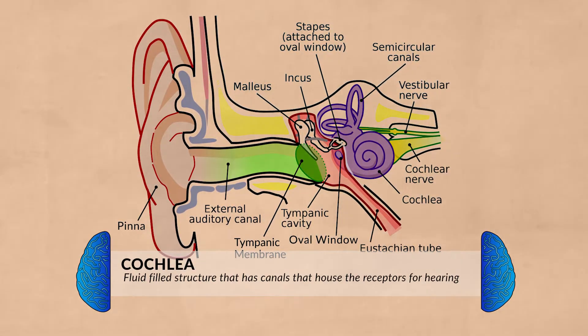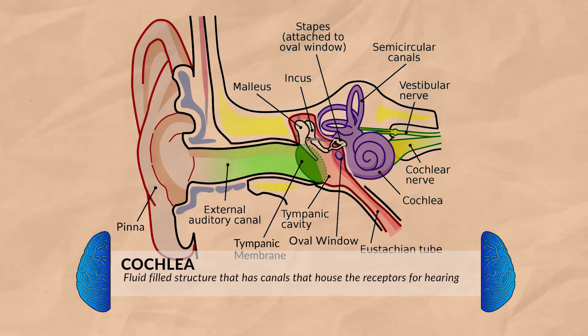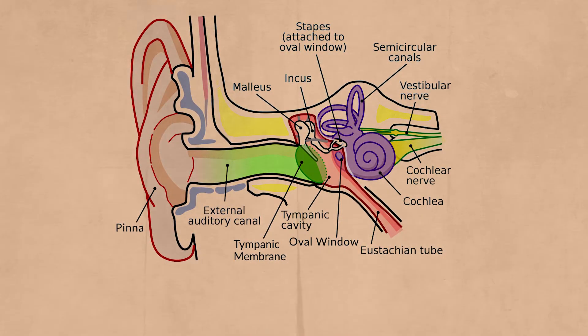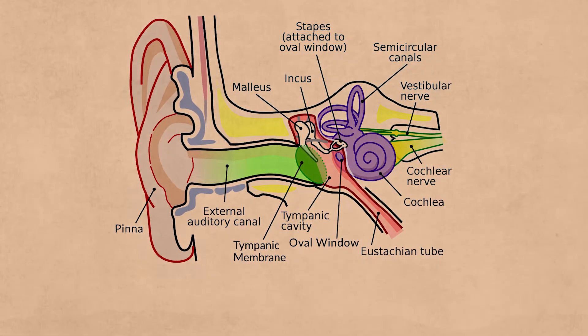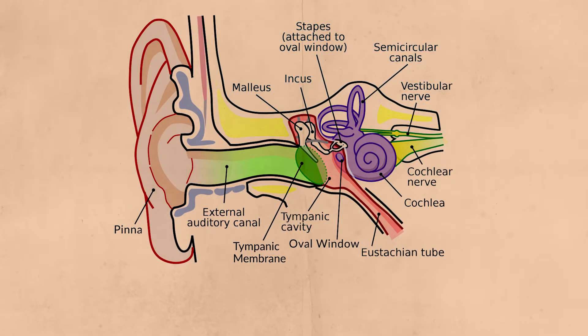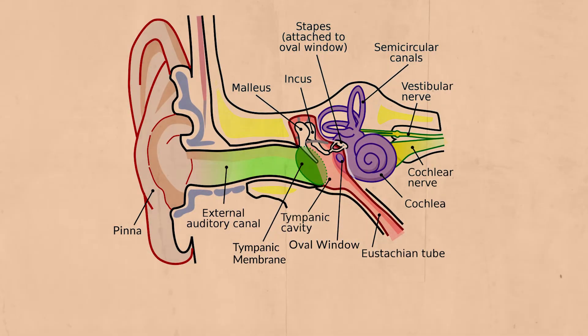This looks like a snail, and like I already said, is filled with a fluid. It has three canals, one of which is the scala media. The floor of the scala media has two very important structures that sit on it: the organ of corti and the basilar membrane.